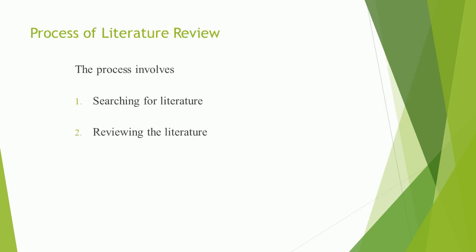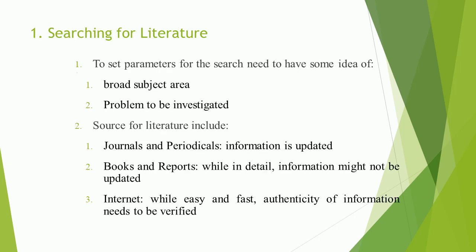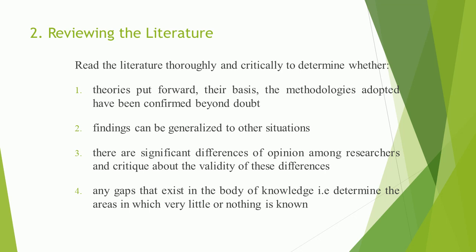The process of literature review involves searching for literature and reviewing the literature. When searching for literature, to set parameters for the research you need to have some idea of the broad subject area and the problem to be investigated. Sources for literature include journals and periodicals, where information is updated; books and reports, which are detailed but information might not be updated; and the internet, which is easy and fast but the authenticity of information needs to be verified.